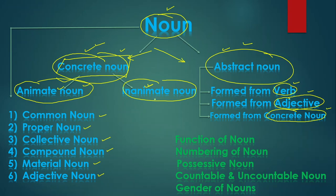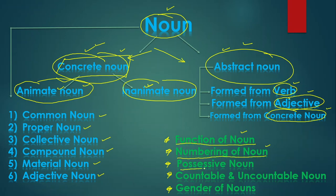Noun also has several topics — these are not kinds but topics we will learn about. First is the function of noun — it has about six functions. Then numbering of noun: singular and plural, with 17 to 18 rules for forming plurals. Then possessive nouns, which show possession. Then countable and uncountable nouns. And finally, gender of nouns — masculine, feminine, common, and neuter — which we will discuss one by one.